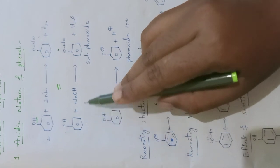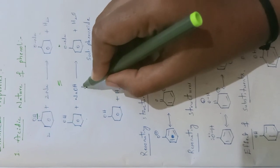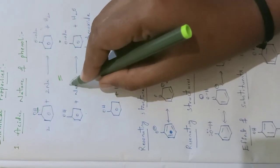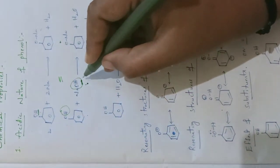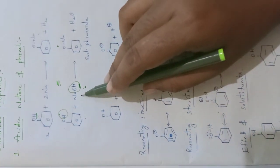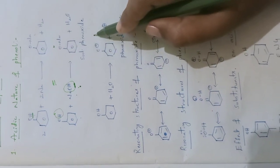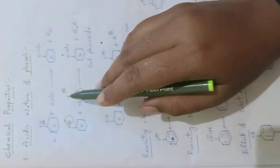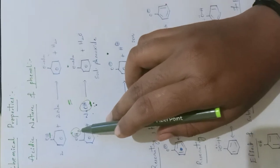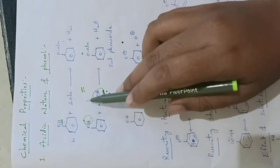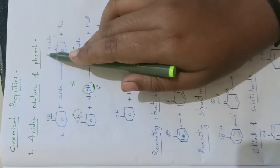Phenol can also undergo reaction with sodium hydroxide, which is a metallic hydroxide. The OH group of sodium hydroxide reacts with hydrogen and together they eliminate as H₂O. Whatever sodium is left undergoes reaction with oxygen to give sodium phenoxide. So whether it is sodium metal or a metallic hydroxide, hydrogen is eliminated as H+, and we can say phenols contain acidic nature.